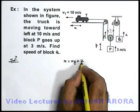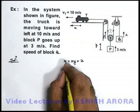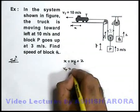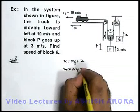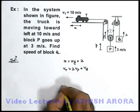If we differentiate this expression, we can simply state differentiation of x will be velocity of truck, twice differentiation of y will be velocity of block P, plus differentiation of z will be velocity of block Q.